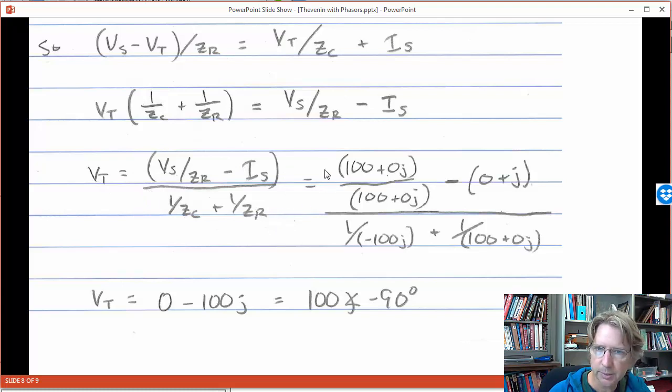And then we can plug in the numbers here, I've just done them all in rectangular coordinates. So VS is 100 plus zero J, ZR also 100 plus zero J, this is ohms and this is volts though. So IS is zero plus J, one with a phase of 90. And ZC and ZR, same way. And then I plug them all into my calculator. And I get this zero minus 100J, and if we convert that to a phasor, it's going to go down in the y direction. So 100 amplitude with a phase of minus 90 degrees.